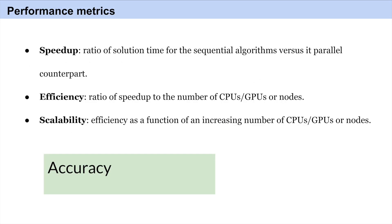Before going into distributed deep learning training, we need to discuss why distributed training is needed. The first major reason is to speed up training. For example, if you want to train on the ImageNet dataset, on a single GPU you need one week for training. To speed that up, you need multiple GPUs with distributed computation. Another reason is efficiency — with multi-core CPUs and multi-node GPUs, we can better utilize our resources.